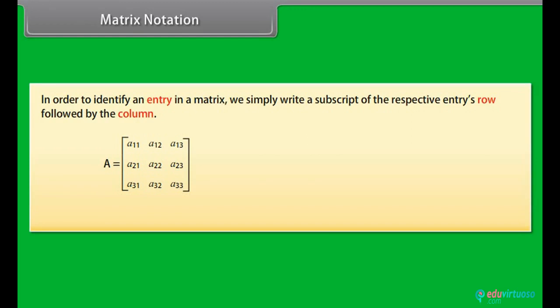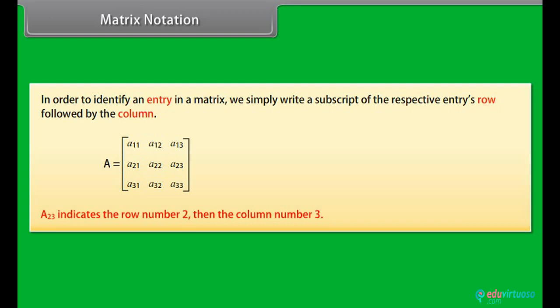Matrix notation: In order to identify an entry in a matrix, we write a subscript of the respective entry's row followed by the column. In matrix A, we write A₂₃ to denote the entry in the second row and the third column. A₂₃ indicates row number 2 and column number 3.